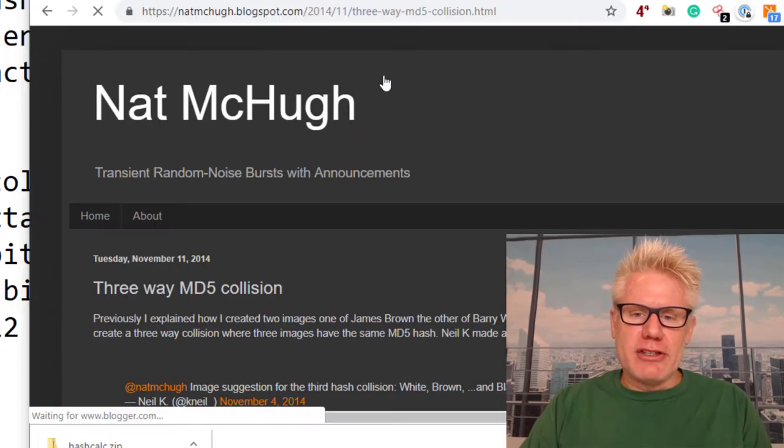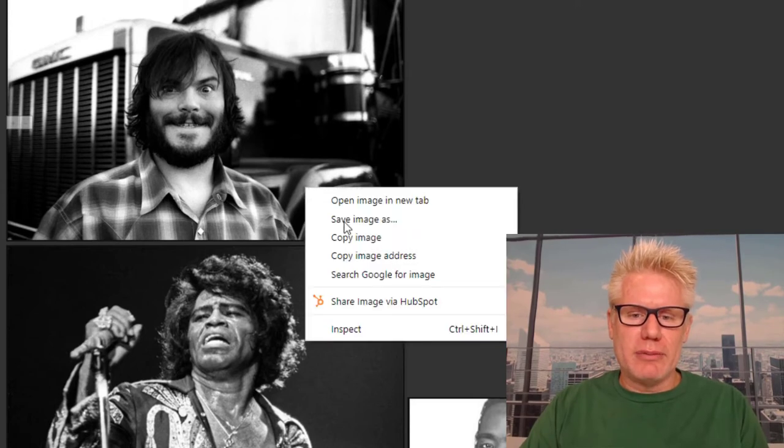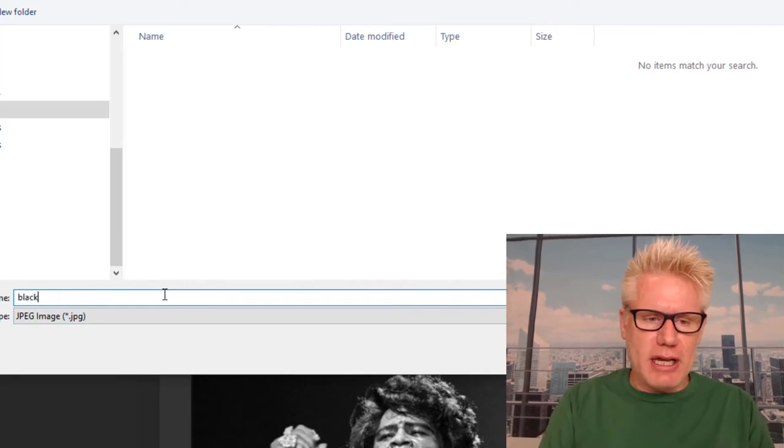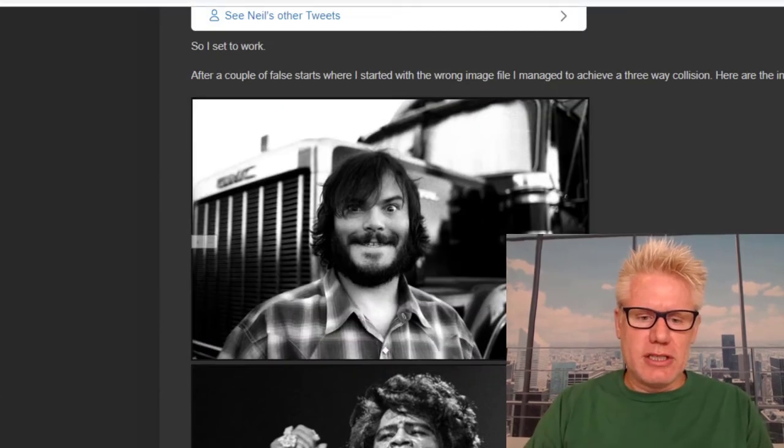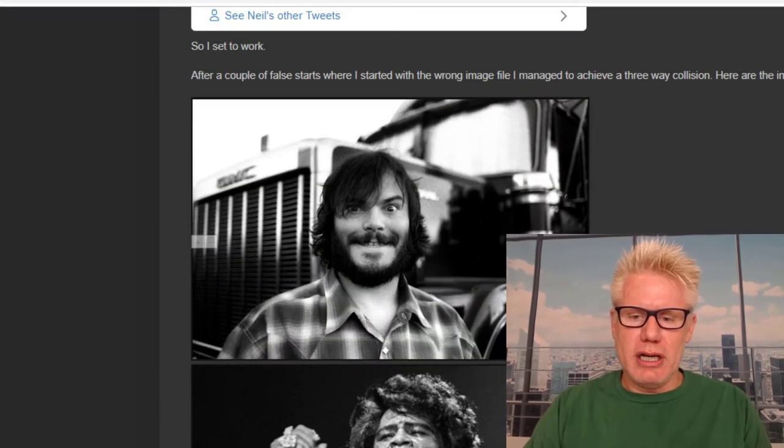So basically, we have these three pictures. Jack Black, James Brown, Barry White, I believe. So I'm going to save each of these. So this one, I'm going to save this one as Jack Black. This one is James Brown. Brown. This one is Barry White.